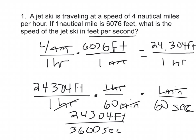So if I divide here, 24,304 divided by 3,600, we get roughly 6.75 feet per second.